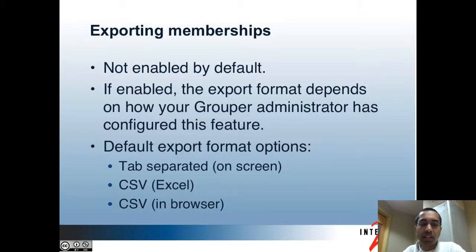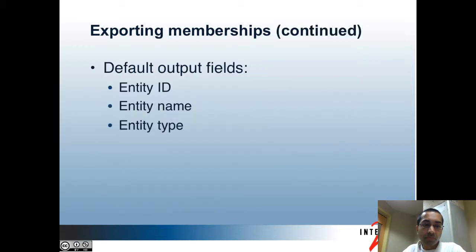The last topic for this video is exporting memberships. This feature is also not enabled by default, so you may not necessarily see it. Even if it is enabled, the export format may differ since it can be changed by your Grouper administrator. The default export format options are tab separated on screen, CSV with Excel, or CSV in the browser. The default output fields are the entity ID, name, and type.